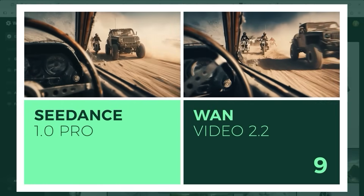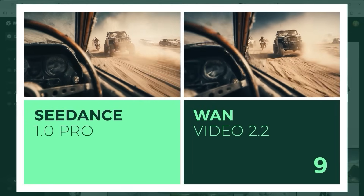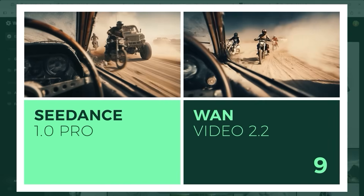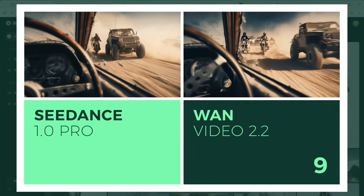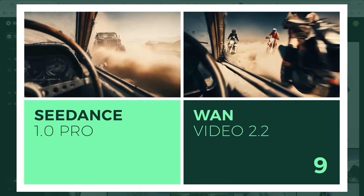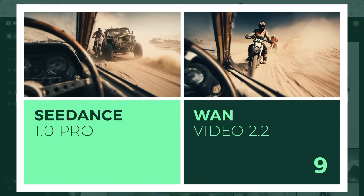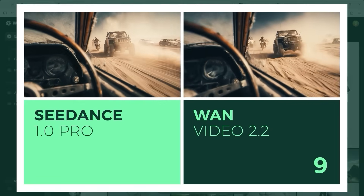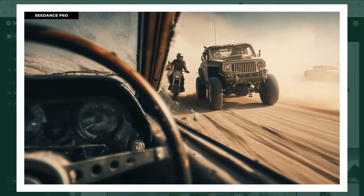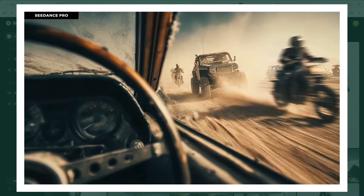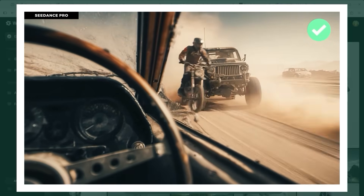Example 9: desert, mad riders, modified vehicles. The idea was to create a POV shot from inside a vehicle, watching the chaos outside. Unfortunately, both platforms ignored my prompt note about opposite vehicle directions. Still, there's a clear difference in execution: C-Dance Pro stands out with much sharper detail and overall visual control, while One 2.2 lags behind in clarity. Despite the prompt issue, this point goes to C-Dance Pro.